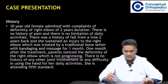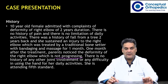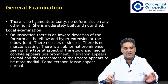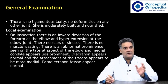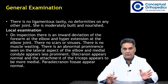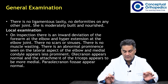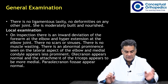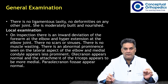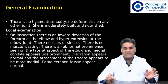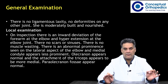There is no history of any other joint involvement or difficulty in using the hands for activity. She is attending fifth class. There is no ligamentous laxity and no deformities of any other joint. She is moderately built and nourished. On inspection, there is inward deviation of the forearm at the elbow and hyperextension of the elbow joint. There is no scar or sinuses and no muscle wasting.